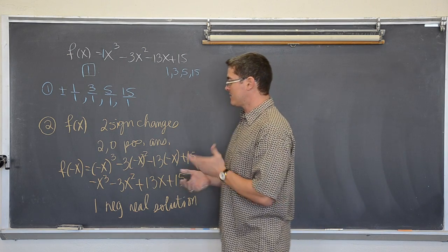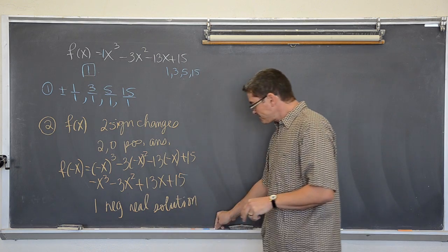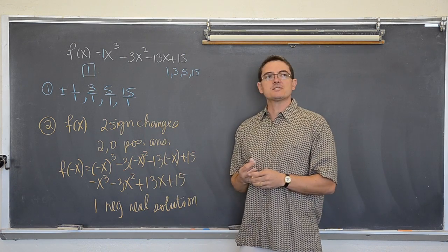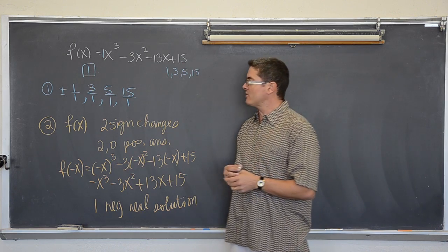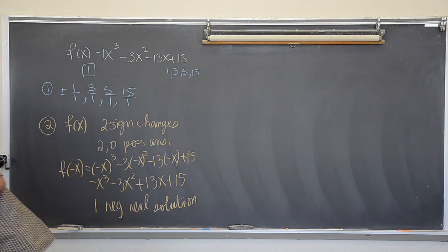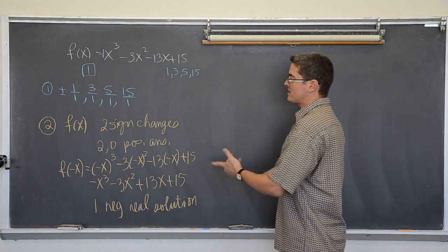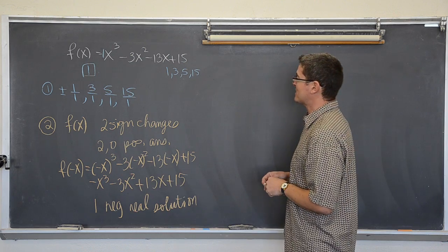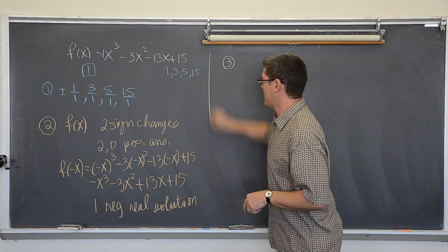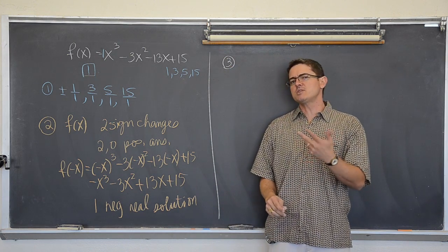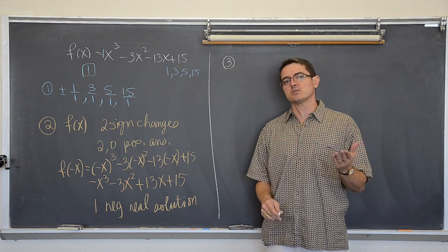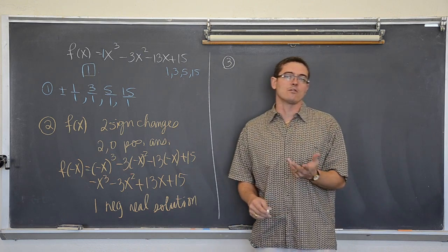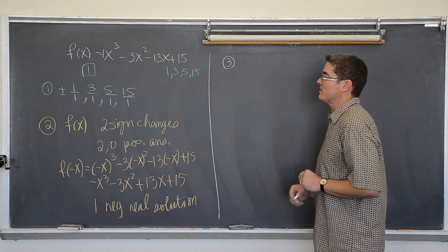Of course, with graphing calculators as an aid, we don't really have to do a lot of guessing and checking. For time, I am just going to say the first number that works is going to be negative 3. So let's do synthetic division with negative 3. Your teacher may also give you the first solution so you can do synthetic division until you get down to the second degree and finish it with the quadratic or factoring.